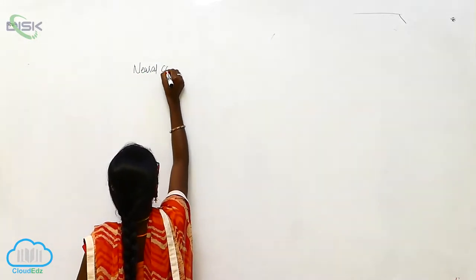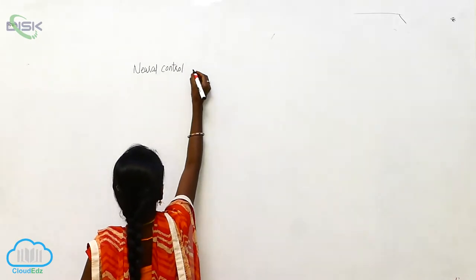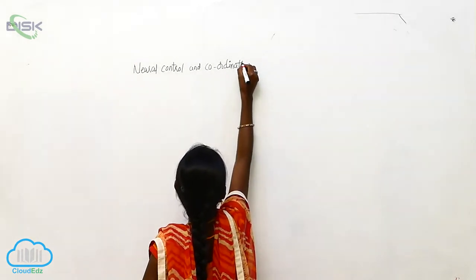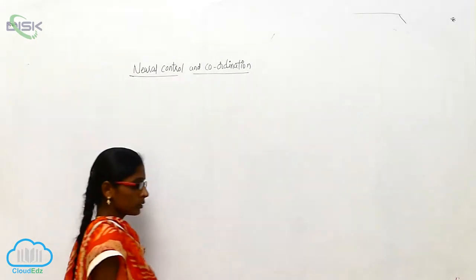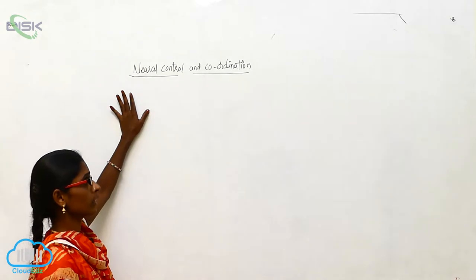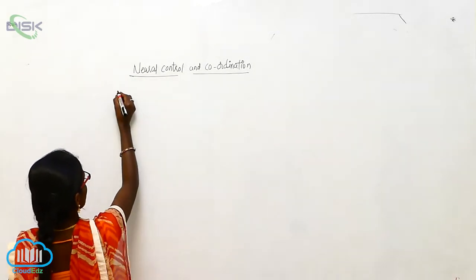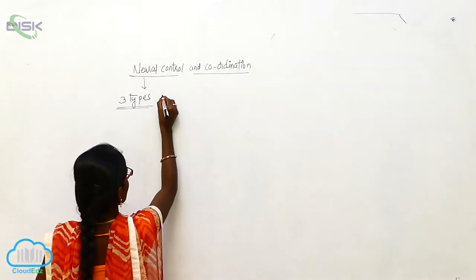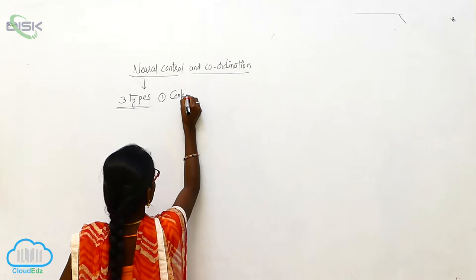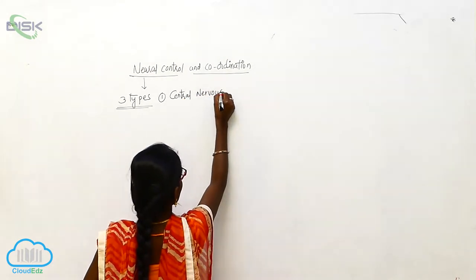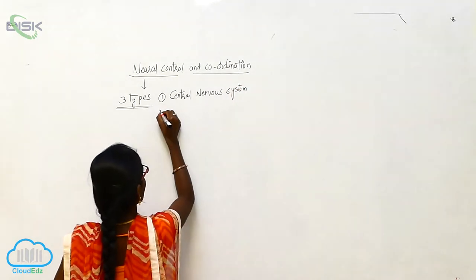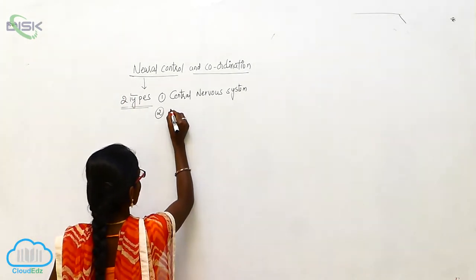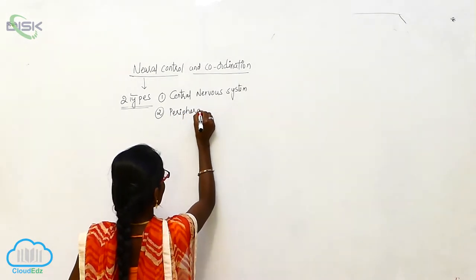Neural Control and Coordination. The Neural System consists of two types: the Central Nervous System and the Peripheral Nervous System.